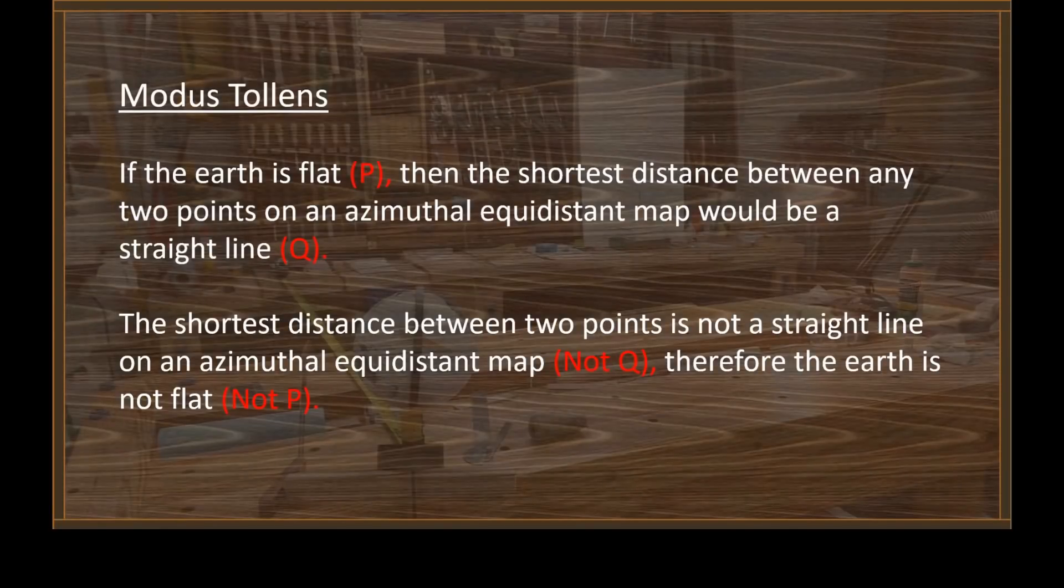That wasn't much of a try, QE. Basically, what you just said is the Earth is flat because I say it's flat. Airplanes experience the acceleration of gravity just like everything else in the vicinity of our planet. Let me give you a Modus Tolens that actually works. If the Earth is flat (P), then the shortest distance between any two points on an azimuthal equidistant map would be a straight line (Q). The shortest distance between two points is not a straight line on an azimuthal equidistant map (not Q). It's a great circle route, QE. Therefore, the Earth is not flat (not P). Chew on that one for a while.